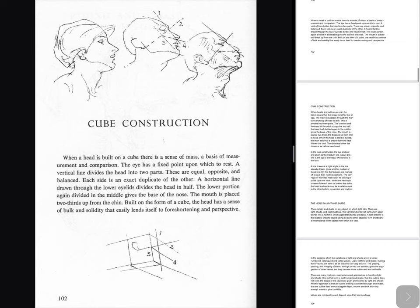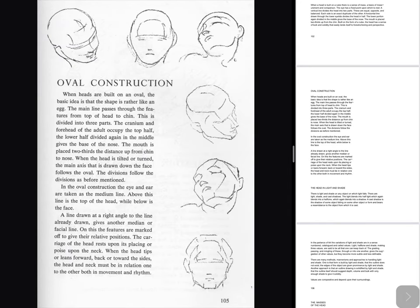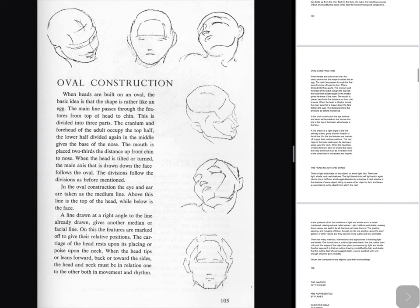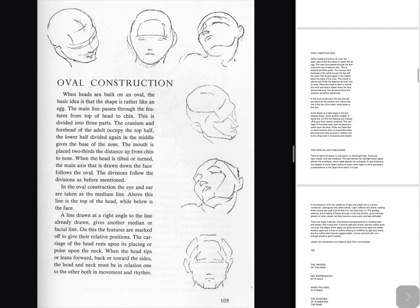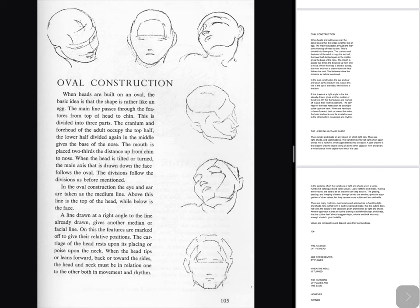Oval construction: When heads are built on an oval, the basic idea is that the shape is rather like an egg. The main line passes through the features from top of head to chin. This is divided into three parts. The cranium and forehead of the adult occupy the top half. The lower half divided again in the middle gives the base of the nose. The mouth is placed two-thirds the distance up from chin to nose. When the head is tilted or turned, the main axis drawn down the face follows the oval, and the divisions follow as before mentioned. In the oval construction, the eye and ear are taken as the medium line — above this line is the top of the head, while below is the face. A line drawn at a right angle to the line already drawn gives another median or facial line. On this the features are marked off to give their relative positions. The carriage of the head rests upon its placing or poise upon the neck. The head in light and shade.